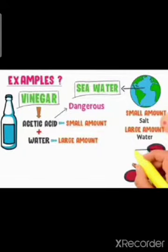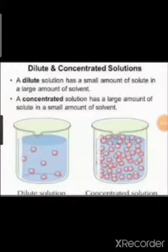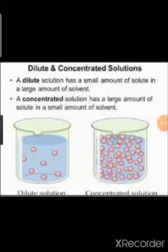Another example of a dilute solution is sea water, where a small amount of salt is dissolved in a large amount of water. The amount of salt is small and the amount of water is large, so it forms a dilute solution. Now let us discuss the concentrated solution. A concentrated solution contains more solute and is also called a strong solution. A solution which has a large amount of solute for a certain volume of solvent is called a concentrated solution.